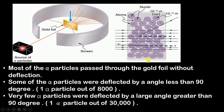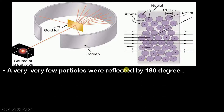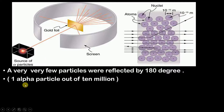The last observation is very crucial: a very, very, very few particles were reflected by 180 degrees. That is, the ray passed, hit the gold foil, and was reflected straight back to the source of alpha particles. The ratio was one alpha particle out of 10 million — meaning very rare alpha particles were reflected back by 180 degrees.